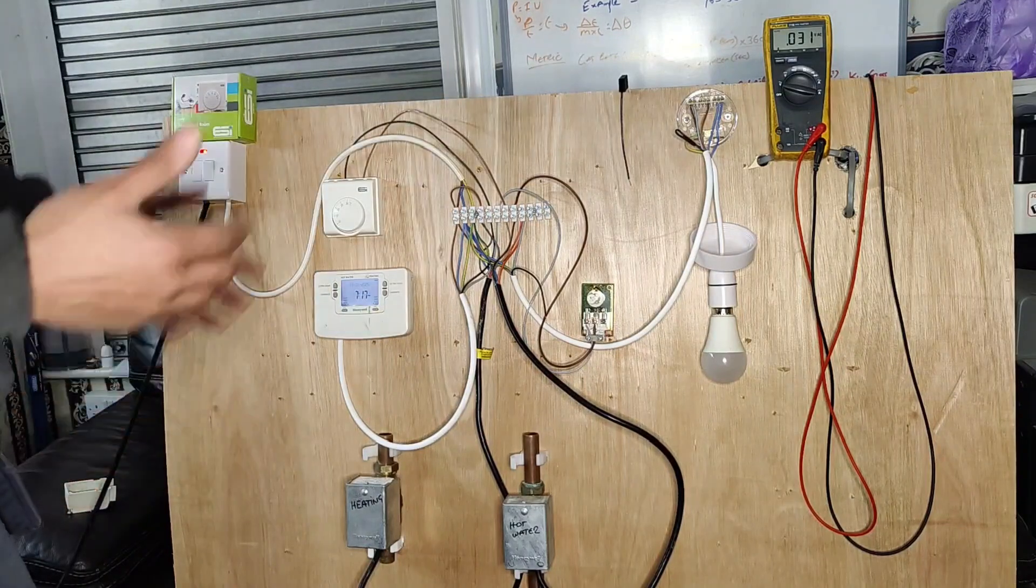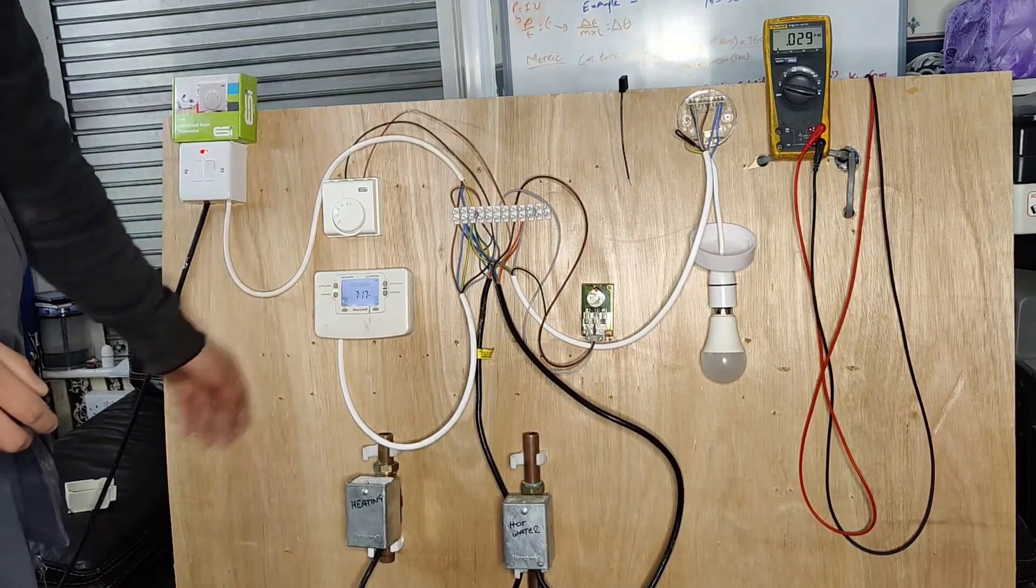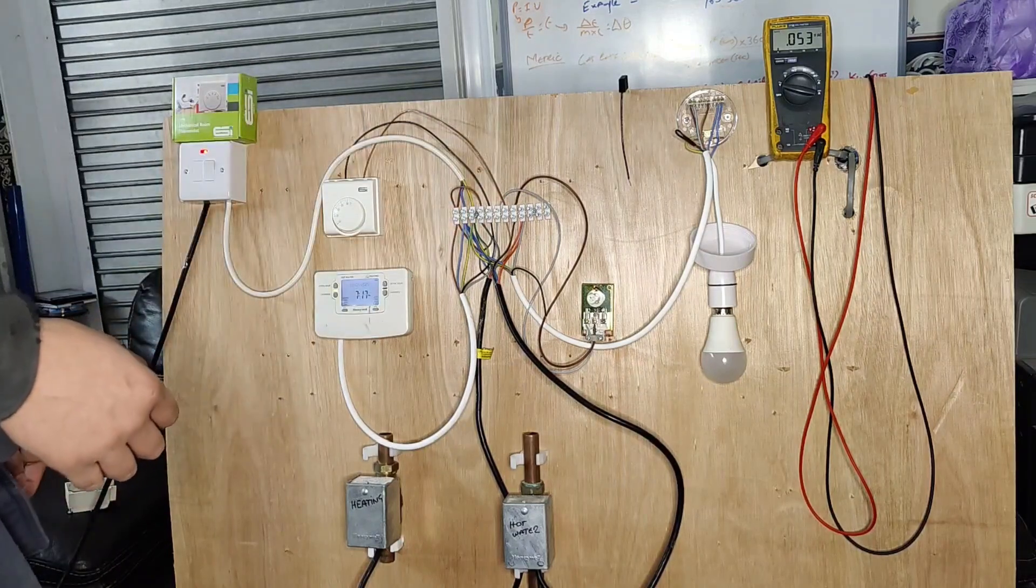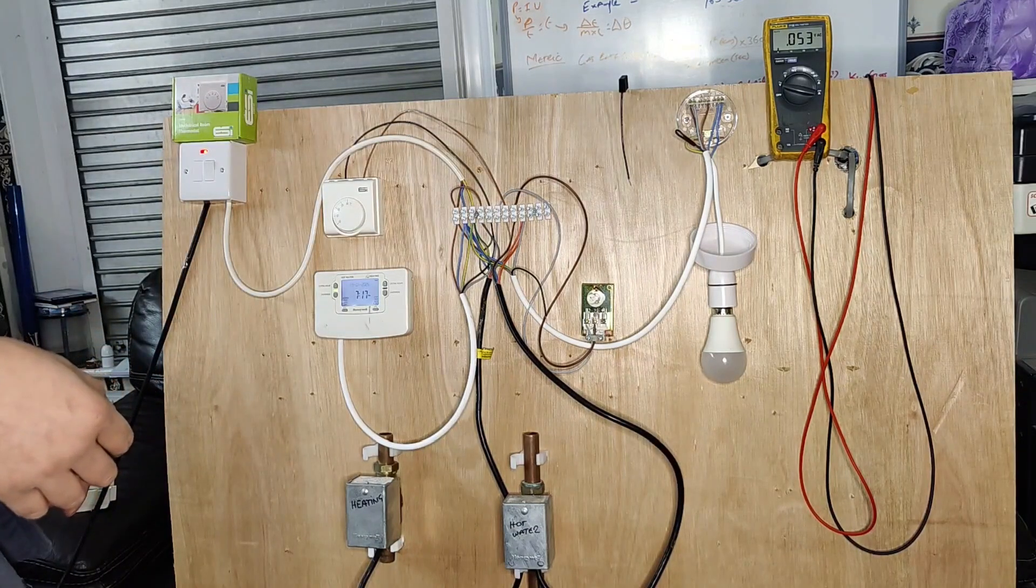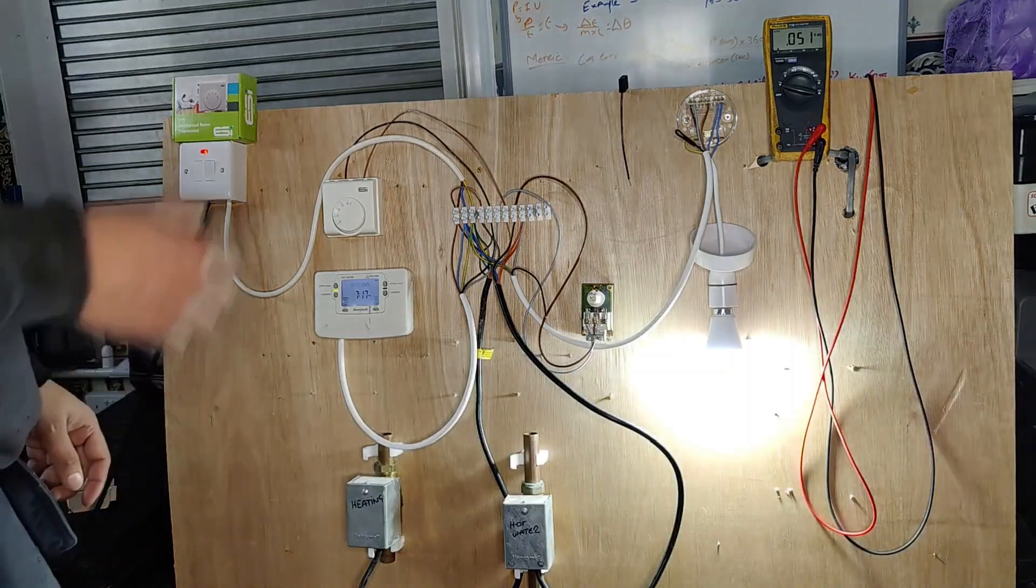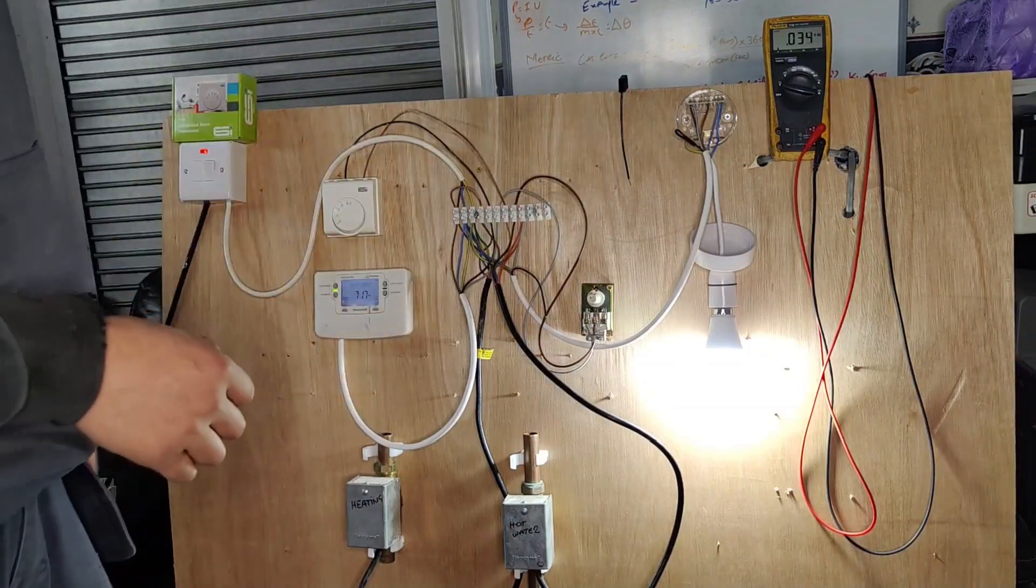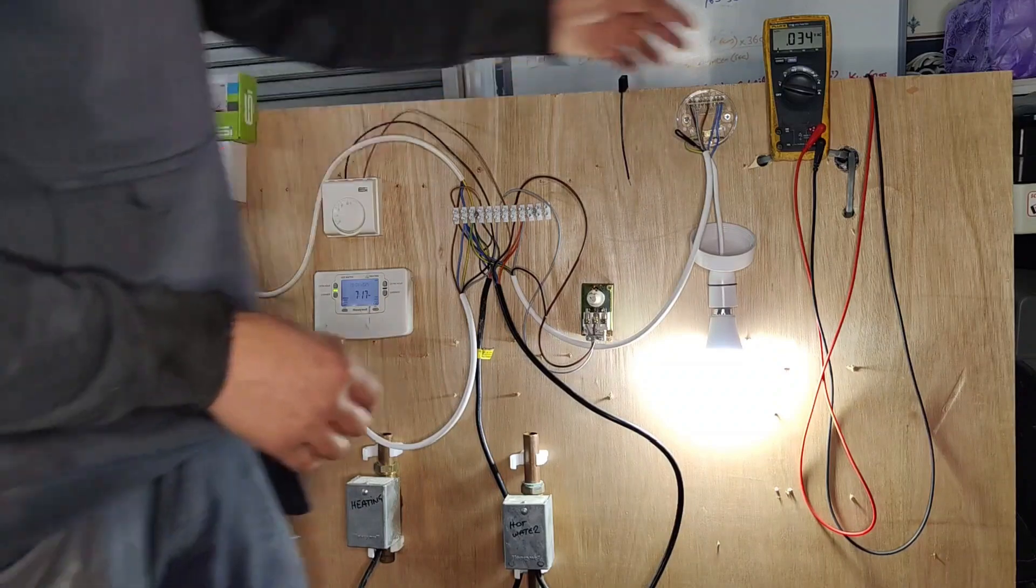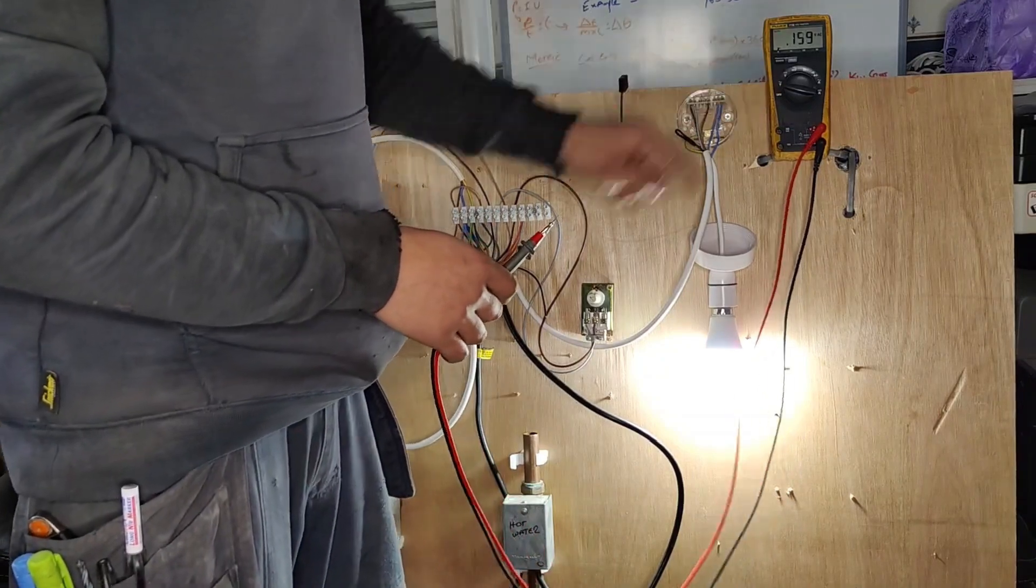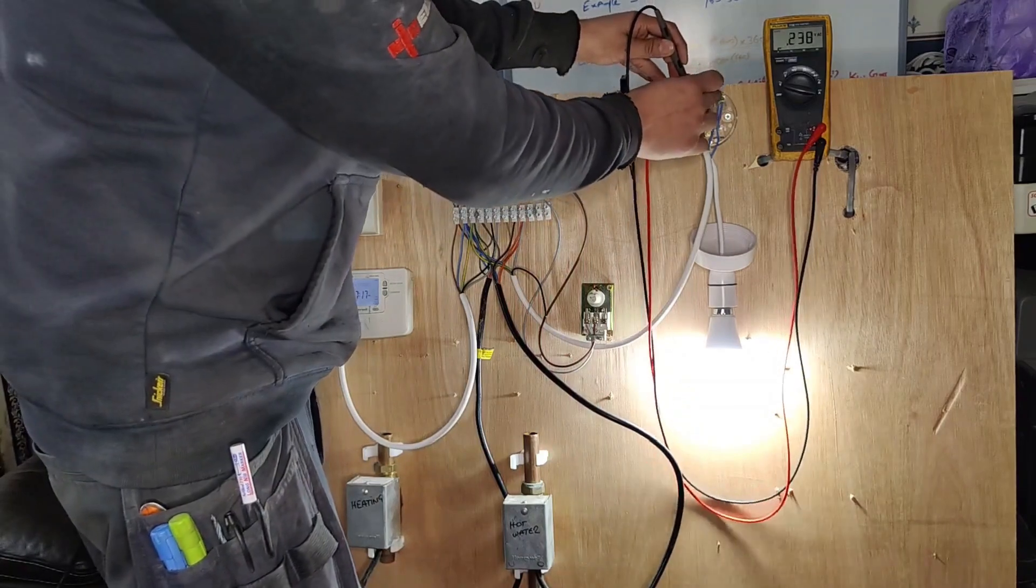Let's create a demand for hot water. The cylinder stat is calling for hot water, so shortly we should have this bulb turning on. Our boiler and pump just came on. Now if we want to check voltage using our multimeter set to AC voltage reading on the signal cable coming to the boiler and neutral, we have 237 volts AC which is absolutely fine.